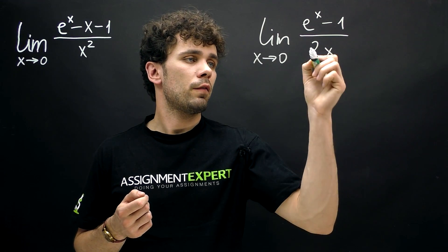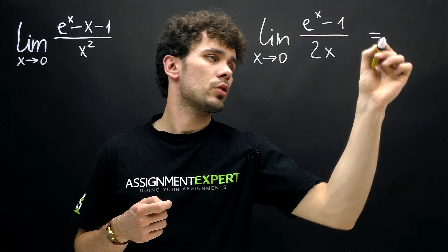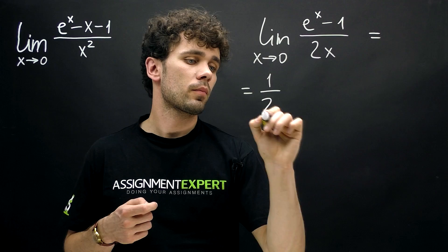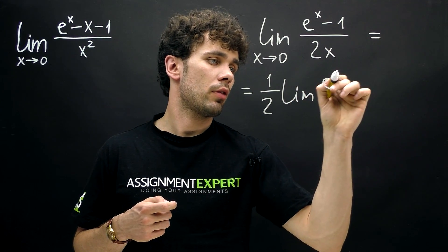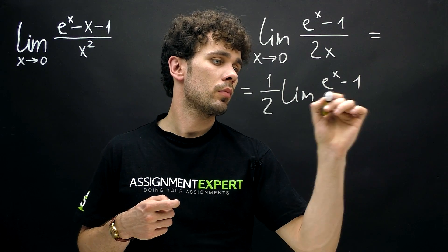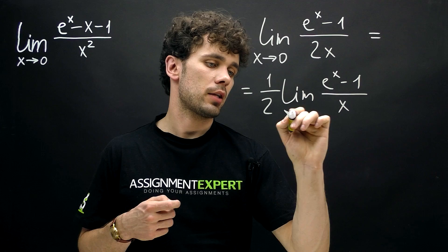But first we can factor out 2 in the denominator in front of our limit. So this gives us one half of limits of e raised to the x power minus 1 over x for x tends to zero.